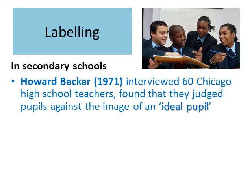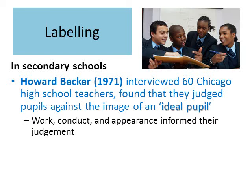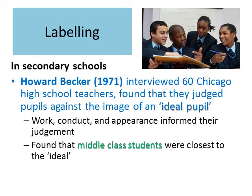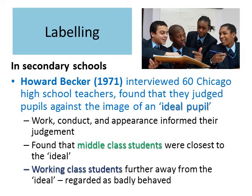Howard Becker looked at labelling in secondary schools. He interviewed 60 Chicago high school teachers and found that they judged pupils against the image of an ideal pupil. In the teachers' minds they have an idea of what the perfect or ideal pupil is, and they are measuring students against that ideal. Work, conduct, and appearance informed their judgement. Becker found that middle class students were closest to the ideal, whereas working class students were further away and were regarded as badly behaved.